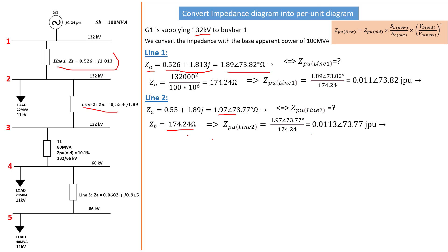Then we can quickly calculate our Z per unit for line 2. Replacing the values in the formula gives us this value here: 0.0113 with an angle of 73.77 degree J per unit ohm. So that's the value for Z per unit for line 2.